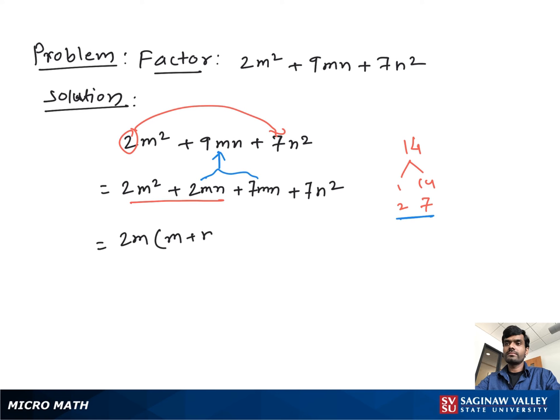Now from this pair we take out positive 7n as common. Then we have left m plus n.